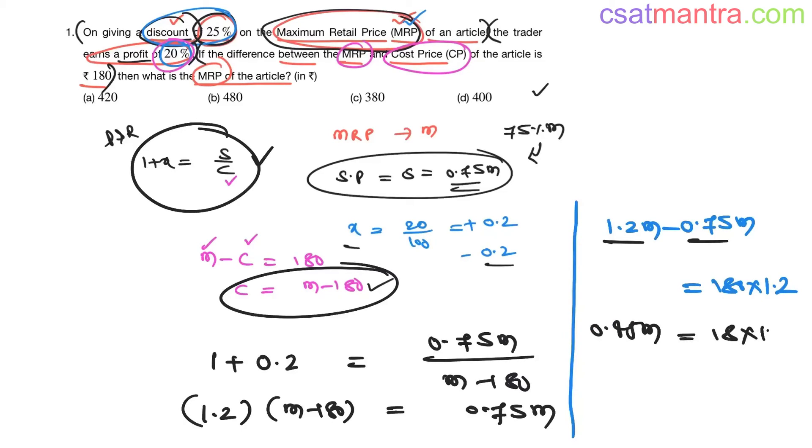Now I am writing it as 45 by 100. Two decimals, that's why two zeros in the denominator. M is equal to 18 into 12 divided by 45 by 100. That's 2 into 12 into 20, which is 24 into 20, that is 480. So M is equal to 480.